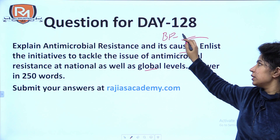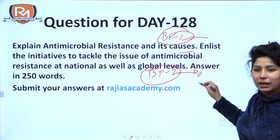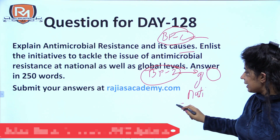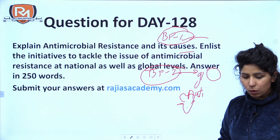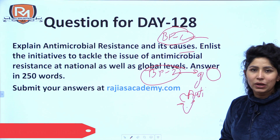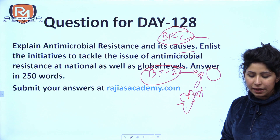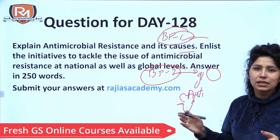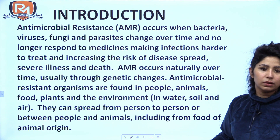The first part of your question will constitute body paragraph 1. Body paragraph 2 will have your global initiatives and national initiatives together. In the conclusion, use your creativity about what antimicrobial resistance is, how to tackle it, and why it is such a big problem. If you cannot come up with anything for the conclusion, simply summarize in one line that this is a very big issue and it is high time we dealt with it.